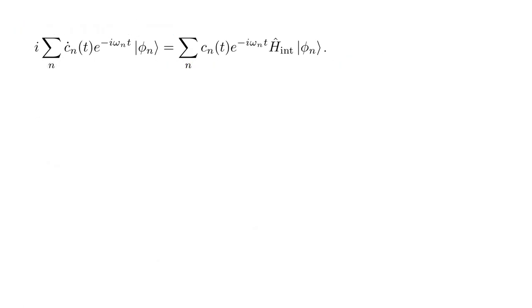This leaves i times sum over n c-n-dot of t e to the minus i-omega-n-t phi-n equals sum over n c-n of t e to the minus i-omega-n-t H-hat-interaction phi-n.